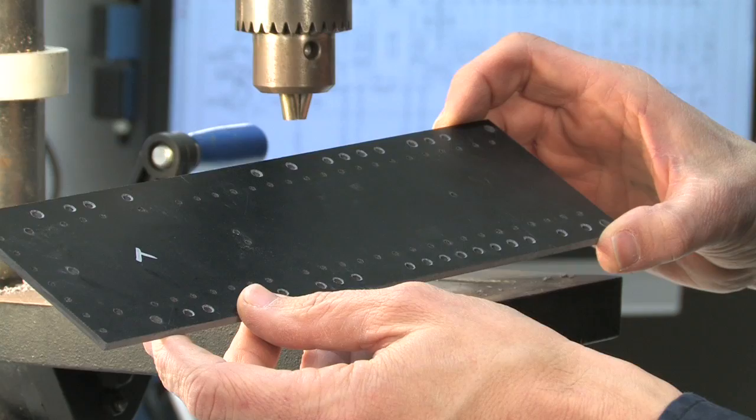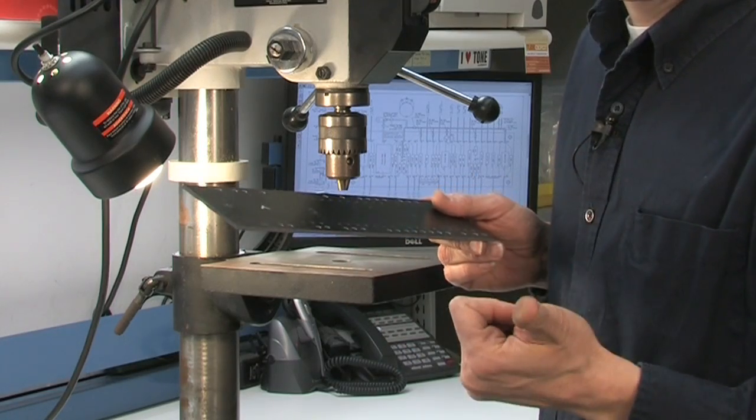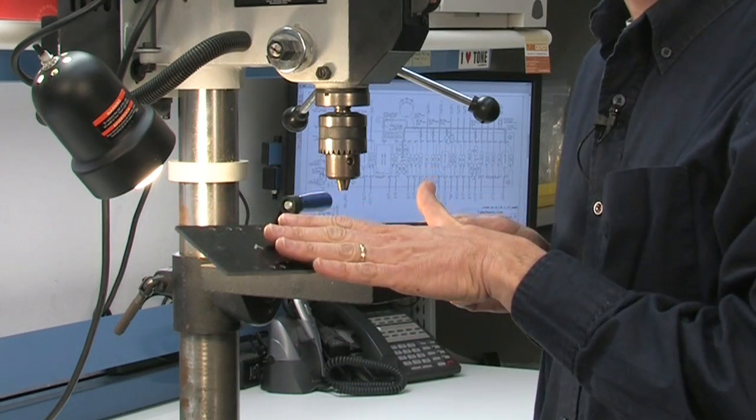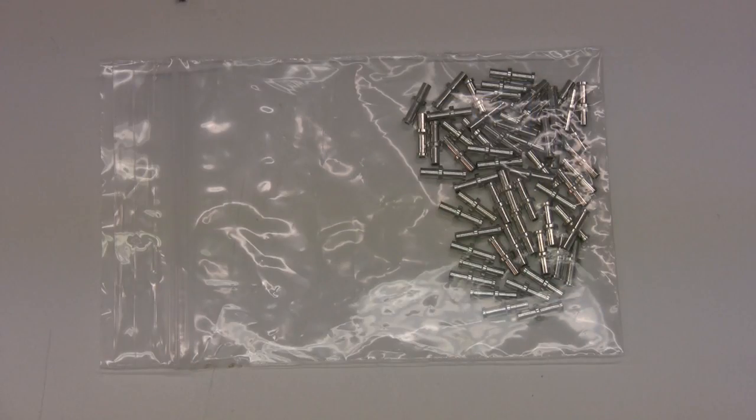We finished three of the four steps on creating your own turret board using the swaging method. Step one was getting a template. Step two was transferring the information from the template to the board. Step three was to drill all the holes. Now we're getting ready to move to step four, which is to install the turrets.